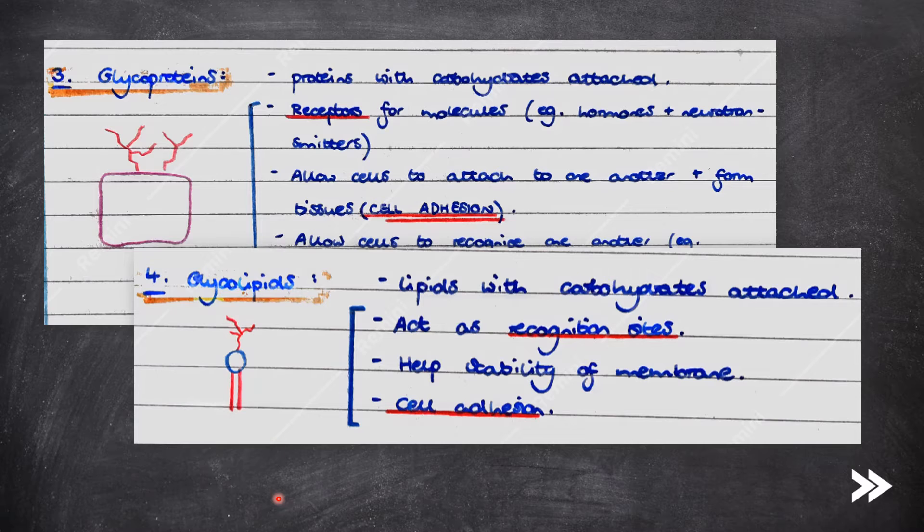Next, we have glycolipids. Glycolipids are this time lipids with carbohydrates attached. These also act as recognition sites. They also provide stability to the membrane and also are important in cell adhesion.